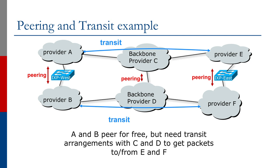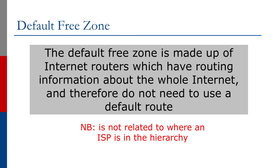In practice, most backbone providers have to buy some transit to guarantee that they can reach all of the internet. There is a very small number of large networks at the top, known as tier 1s, who peer with each other and can reach the whole internet without buying transit from anyone else. Right now, this is over 700,000 prefixes and continues to grow. The parts of the internet which work this way and don't have any default route are called the default free zone, and this is what you could think of as the core of the internet as opposed to the edge.